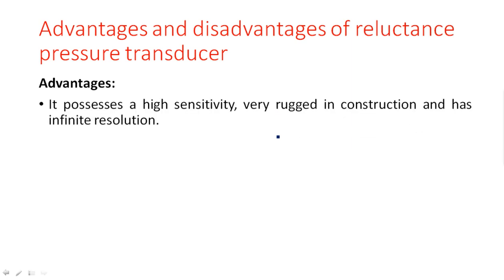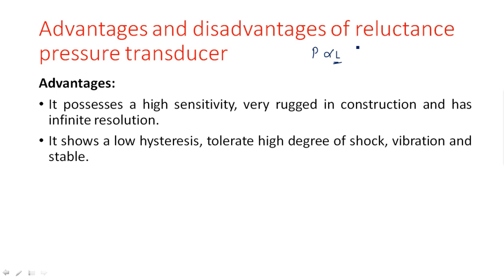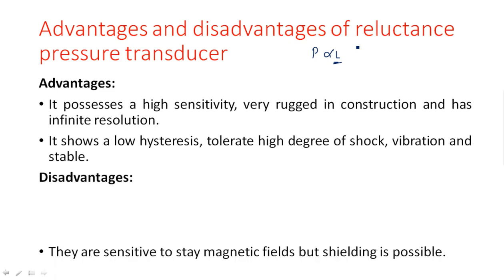Advantages of the reluctance pressure transducer: it possesses high sensitivity, is very rugged in construction, and has infinite resolution. Even for small pressures, it gives a large output variation in inductance. It also shows low hysteresis, tolerates a high degree of shock and vibration, and is stable.